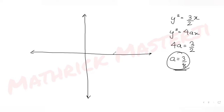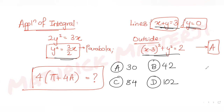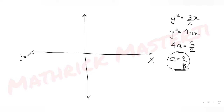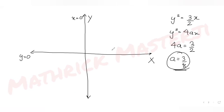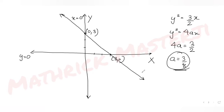The line x + y = 3 has x-intercept at (3, 0) and y-intercept at (0, 3). The line y = 0 is the x-axis. We plot both: the line passes through (0, 3) and (3, 0), and y = 0 is the horizontal axis.